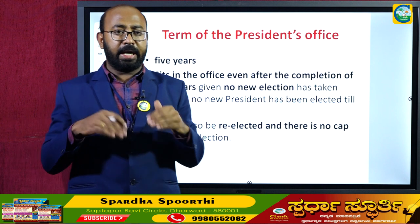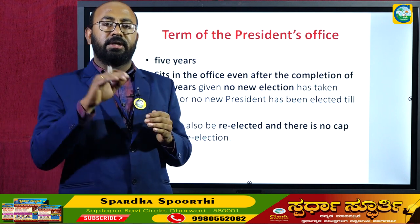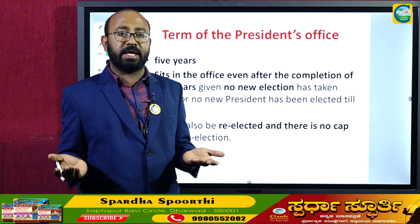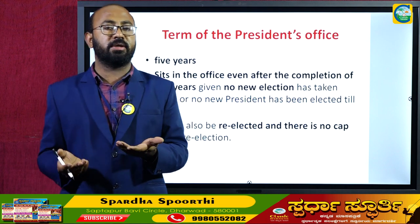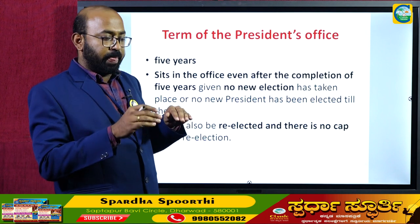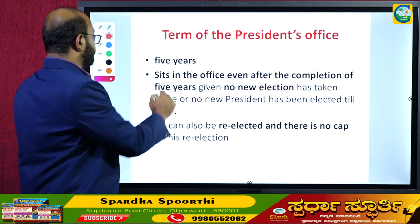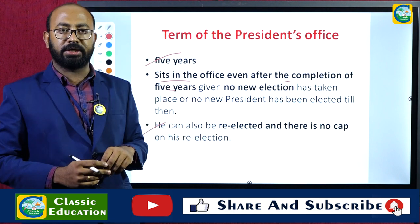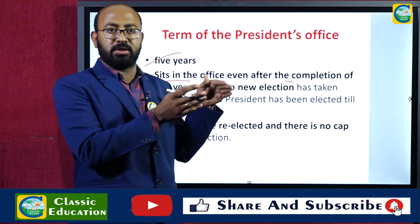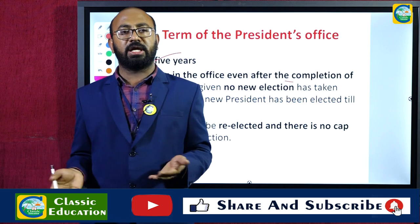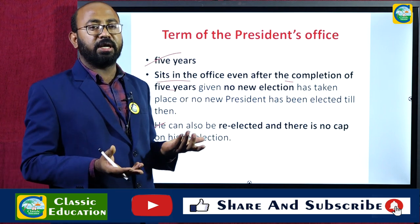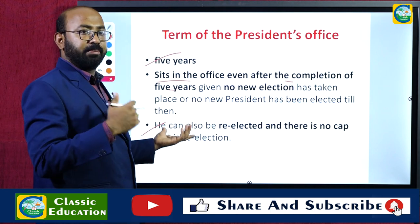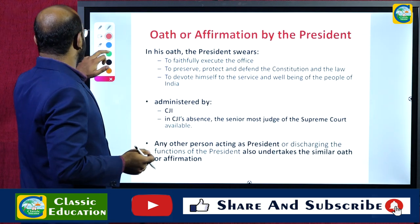The term of office of the President is five years. If the election has not been decided by the time the term ends, the president can continue in office beyond five years until the next president is elected. The president can also be re-elected — there is no ceiling limit on the number of times a person can become president. He can be re-elected after every five years, any number of times.